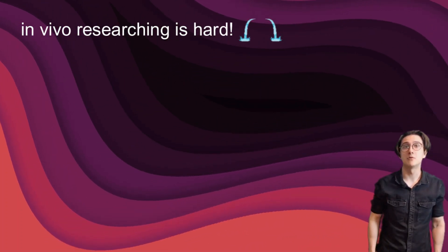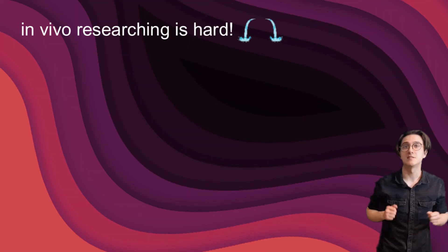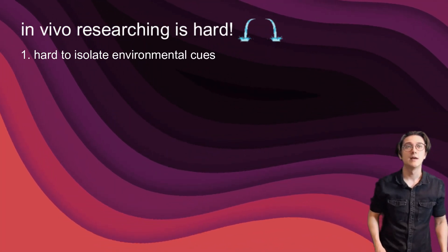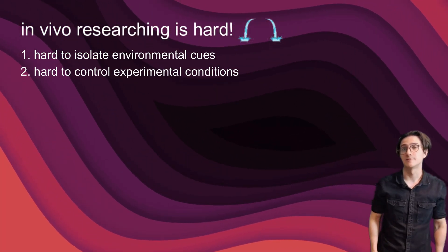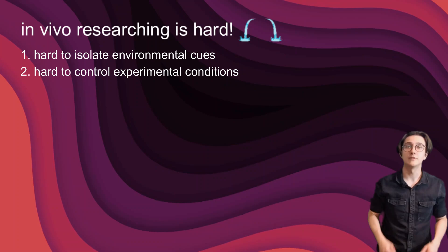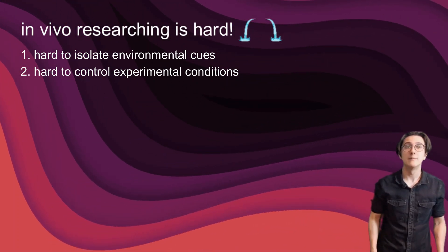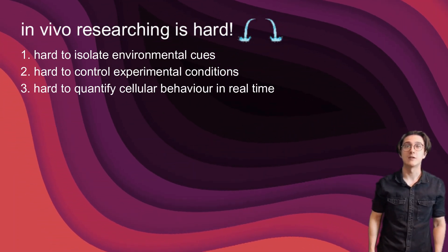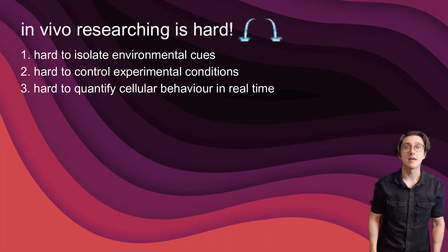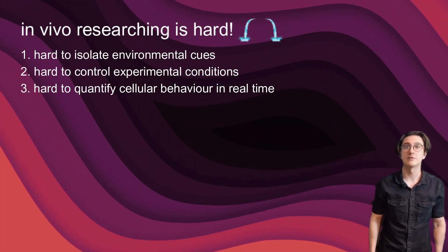In vivo researching poses high difficulties in isolating specific environmental cues. It also lacks the ability to precisely control experimental conditions. In addition, limitations in visualizing and quantifying cellular behavior in real-time makes it very strenuous to draw conclusions.